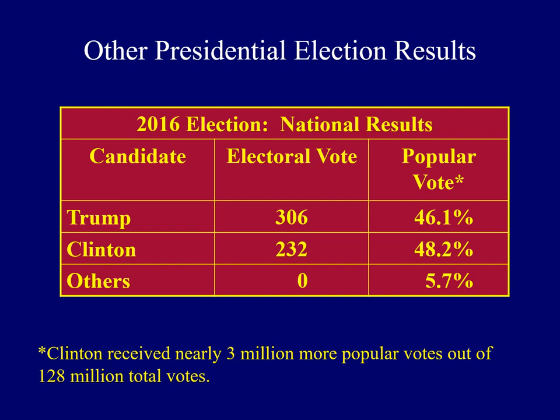Here we see another recent presidential election result. In 2016, President Trump clearly won the presidency with 306 electoral votes to Hillary Clinton's 232. However, the popular vote was different — Clinton actually received 3 million more popular votes than President Trump did. This is rare, but it has happened at other times in American history.